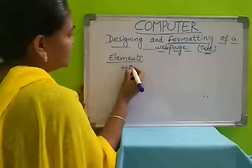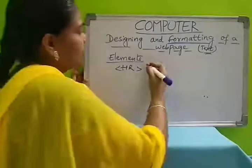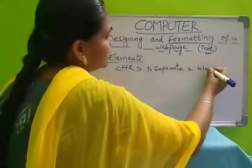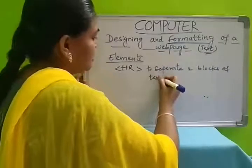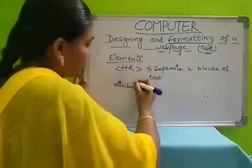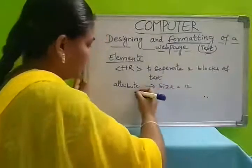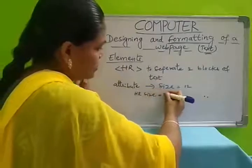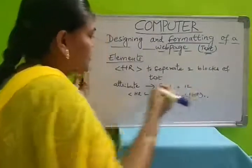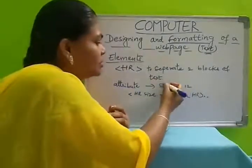Like that, we have HR. HR is used to separate two blocks of text. For this we have the attribute 'size' — how much separation you want, you can mention in the size attribute. For example: HR size equals to 12. You have to close the HR tag. This is another element used to separate two blocks of text. If you want more space, you can mention a larger size.